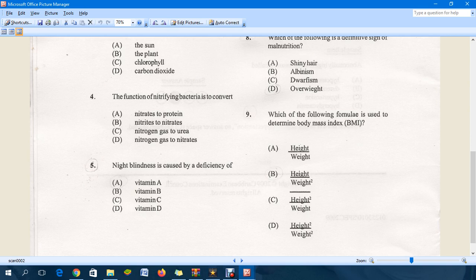Question five: Night blindness is caused by a deficiency of which one of these vitamins? The answer is A, vitamin A. The word deficiency means lack of, so that simply means you're not eating or consuming enough of that particular nutrient.